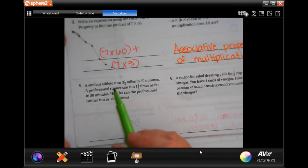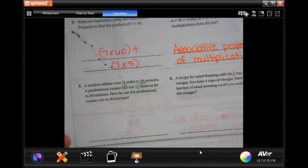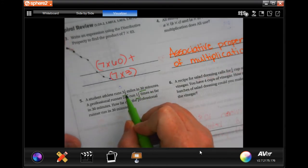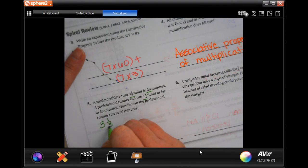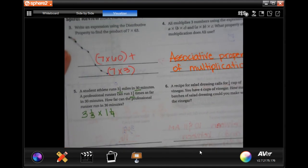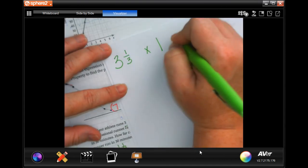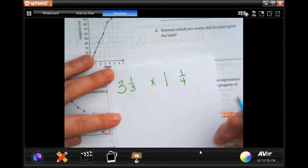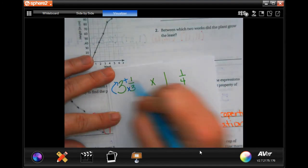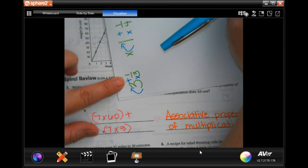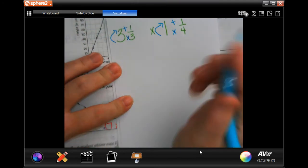A student athlete runs 3 and 1/3 miles in 30 minutes. A professional runner can run 1 and 1/4 times as far in 30 minutes. How far can a professional runner run in 30 minutes? So really all we need to know is 3 and 1/3, and we're going to multiply that by 1 and 1/4. So I'm going to use some scrap paper to do it. It's a little bit easier for y'all to see what I'm doing. So I'm going to do dead man, and I'm going to turn this into an improper fraction, and I'm going to do the same thing right here.